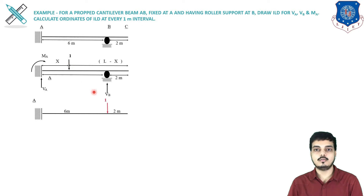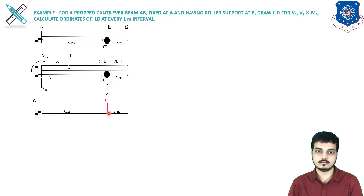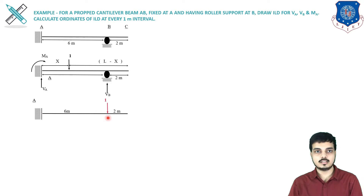Next, we find the number of unknowns. The roller support at B is the redundant. We remove this roller support and apply a unit load at that point — the point of redundancy. The span is 6 meters from A to B and 2 meters from B to C. The next step is to draw the bending moment diagram using the conjugate beam method.